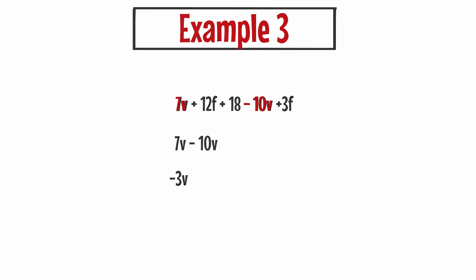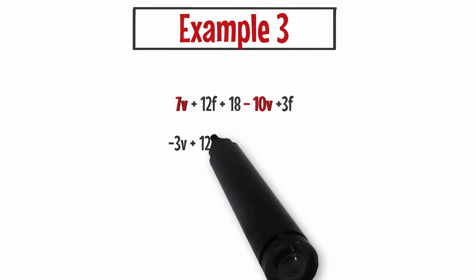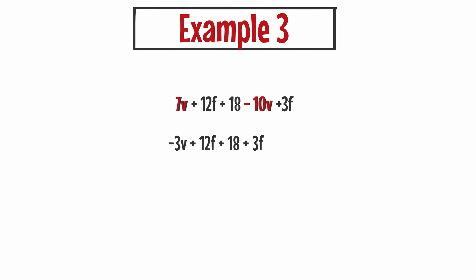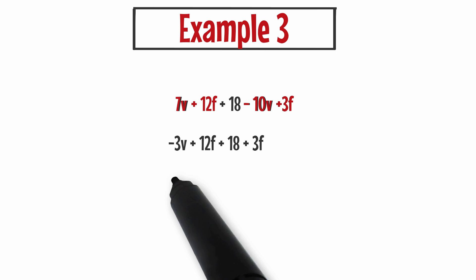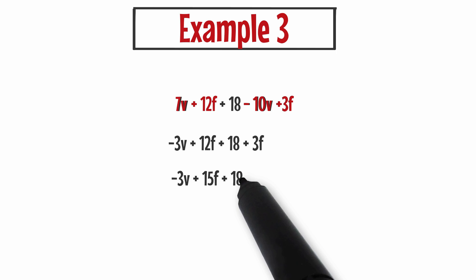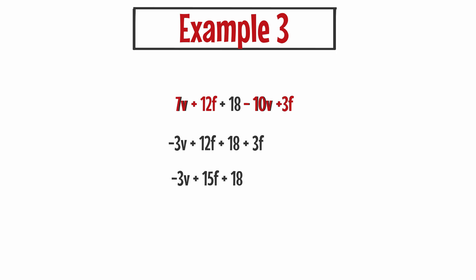Now I'm going to rewrite all the other parts of the expression. I have a plus 12f to bring down, a plus 18, and a plus 3f. Now I'm going to combine the flutes. I have plus 12 flutes and plus 3 flutes, so 12 flutes plus 3 flutes equals 15 flutes. I now have negative 3v plus 15f. There's a plus 18 that didn't get used and there's nothing to combine it to, so you just bring it down. So your final answer for example number 3 is negative 3v plus 15f plus 18.